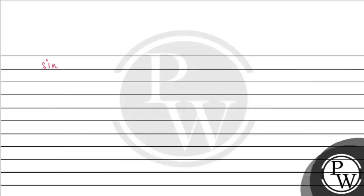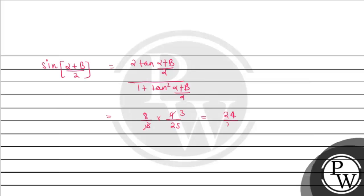To find sin(α+β), we use: sin(α+β) = 2tan((α+β)/2) / (1 + tan²((α+β)/2)). Substituting tan((α+β)/2) = 4/3: that gives (8/3) divided by (1 + 16/9) = (8/3) / (25/9) = 24/25. So the answer is 24/25. I hope you all understood this explanation — thank you and all the best.